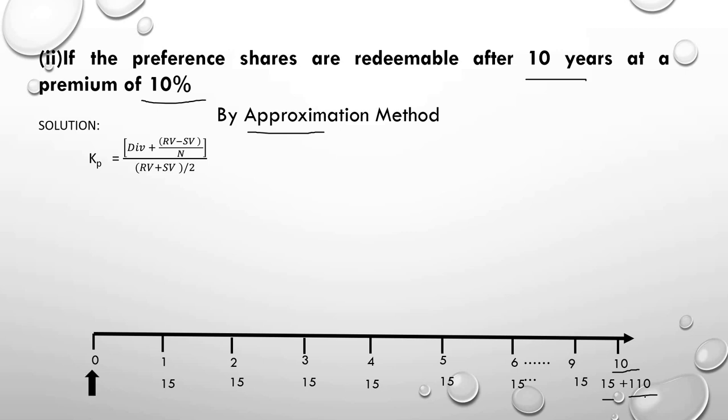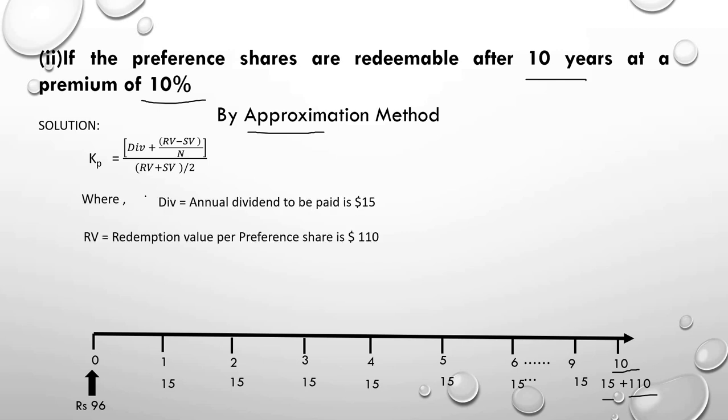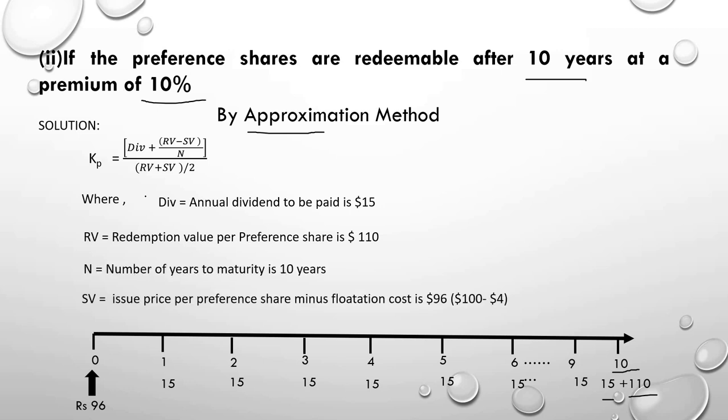At time zero the company gets net proceeds of $96. The approximation method formula is: KP = [Dividend + (RV − SV) ÷ n] ÷ [(RV + SV) ÷ 2]. Here, dividend = $15, redemption value RV = $110, n = 10 years, and sale value SV = $96. Solving this gives KP ≈ 15.92%, which is just an approximation, not the accurate value.